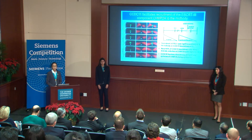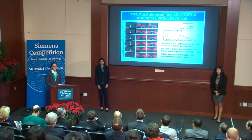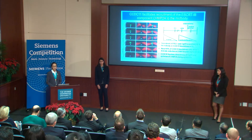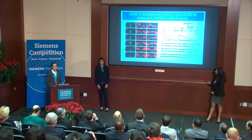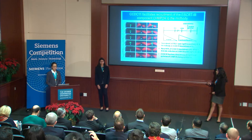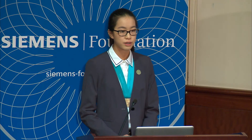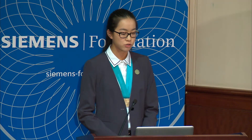PRC1 and CEP55 showed no obvious changes in signal intensities at the mid-body in CCDC11 knockdown cells. However, CHMP2A showed a dramatic decrease in knockdown cells. Through quantification analysis, it was revealed that 90% of knockdown cells experienced a decrease in CHMP2A. This suggests that CCDC11 acts downstream of PRC1 and CEP55 and upstream of ESCRT-III filament formation, and that CCDC11 promotes the recruitment of CHMP2A to the mid-body.